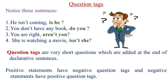Let us know what are question tags. Sometimes we make a statement about something we are not fully assured. To make things clear, we need the approval of the listener. It is in this situation that we add short questions to the statements. These short questions are known as question tags. To make a question tag, we need a verb and a pronoun. Question tags are never made from nouns. Positive statements have negative question tags and negative statements have positive question tags.